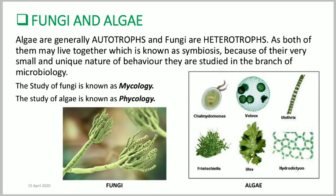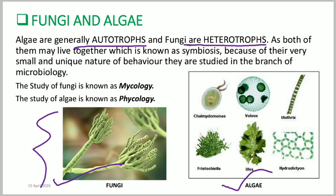Fungi and algae differ in their nutrition. Algae are autotrophs — they can make their own food — whereas fungi are heterotrophs, dependent on other organisms. Examples of algae include chlamydomonas, volvox, and ulva. Penicillium is an example of fungi. The study of fungi is known as mycology, and the study of algae is known as phycology or algology.